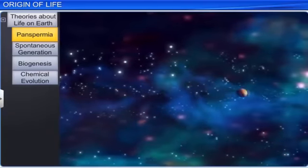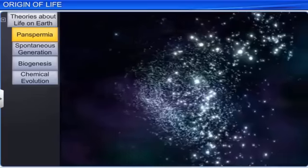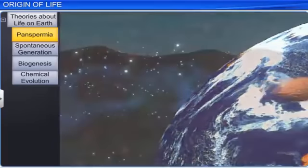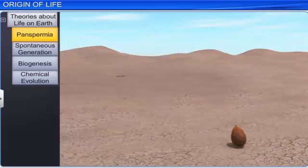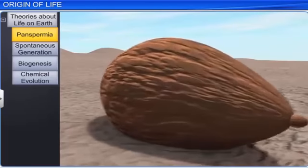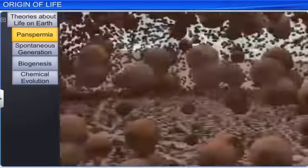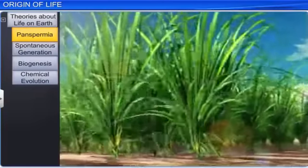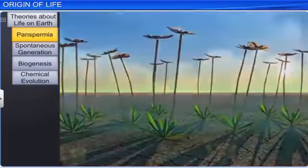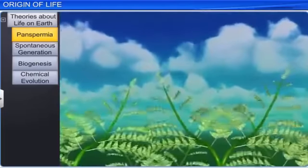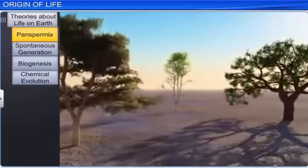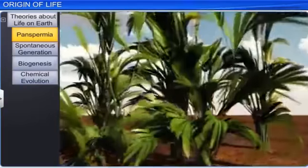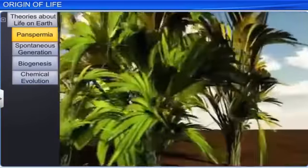Panspermia is the oldest theory, founded by Greek thinkers. It explains that units of life called spores were transferred to different planets. Panspermia assumes that seeds of life exist all over the universe. Therefore, the life on earth may have originated after one such seed was deposited on the earth from somewhere in the universe. This theory generates much interest even today.